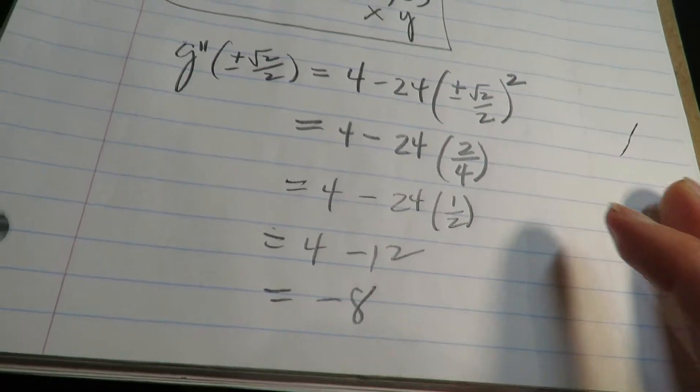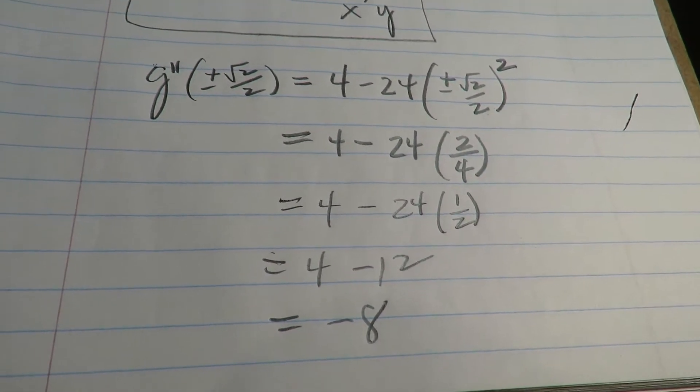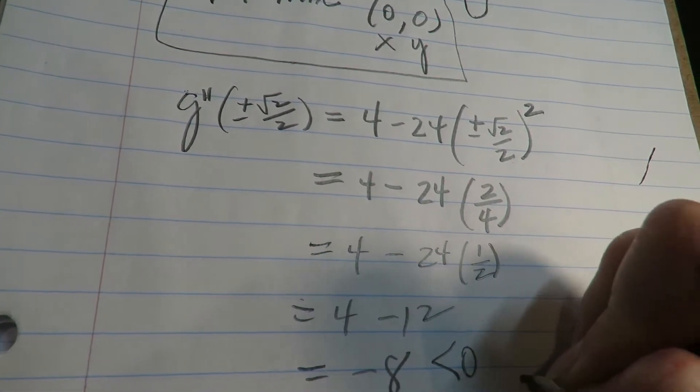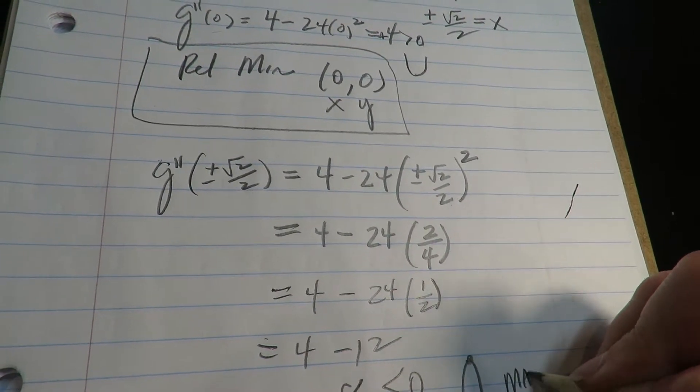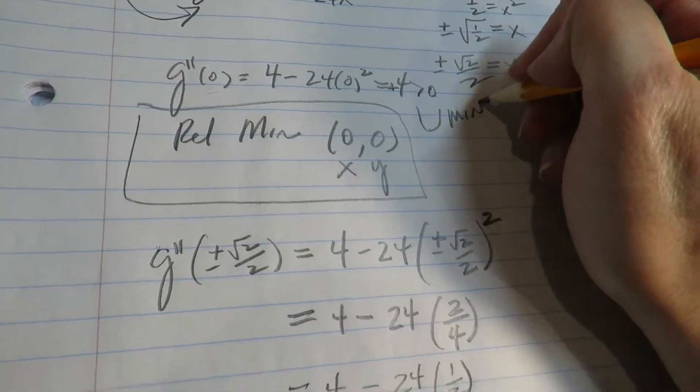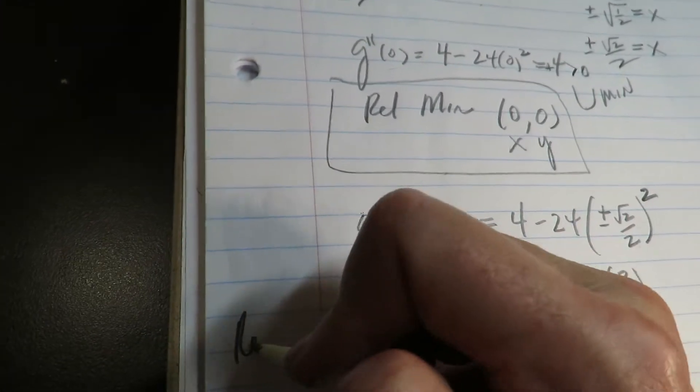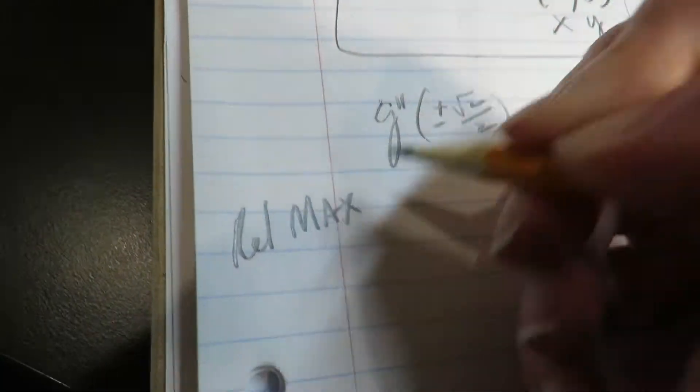And again, it's not so much that it's negative 8, it's that it's negative. Since it's less than zero, is concave down, which means that you have a max. All right, so you have a relative max.